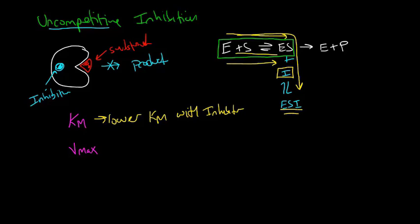How about Vmax? Well, with Vmax, we're thinking about the conversion of our enzyme substrate complex to enzyme plus products. So we're thinking about this rate constant here, K2. And we know that we can only achieve Vmax if 100% of our enzyme is in the form of the enzyme substrate complex.